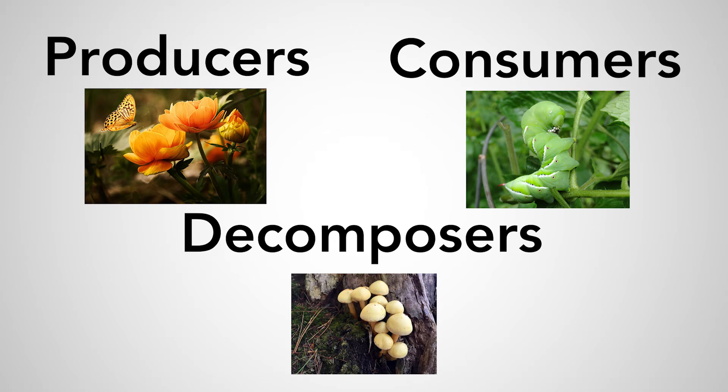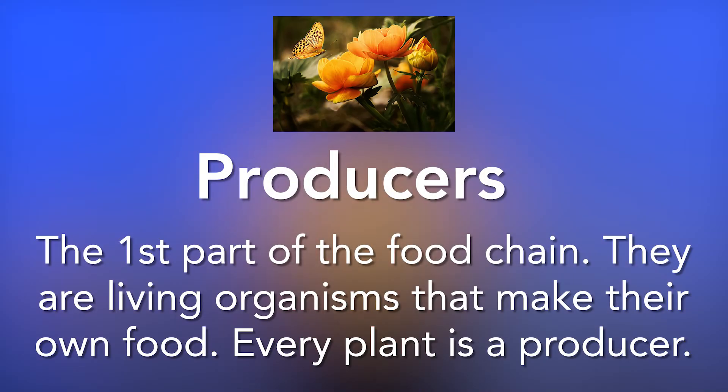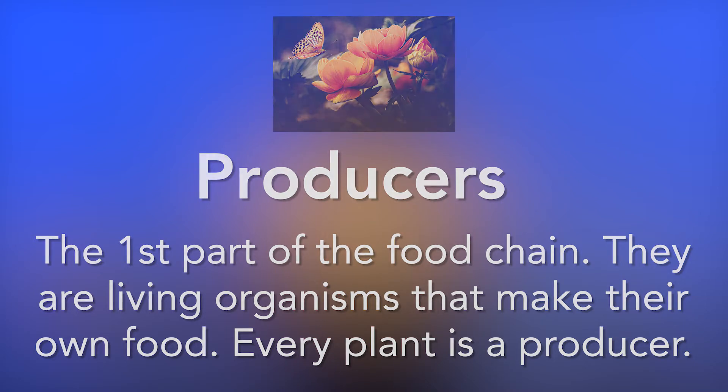Today, we're going to focus on producers. Producers are the first part of the food chain. They are living organisms that make their own food. Every plant is a producer. I bet you're wondering how a plant can make their own food. Take some time to discuss with your class about how you think plants make their own food.